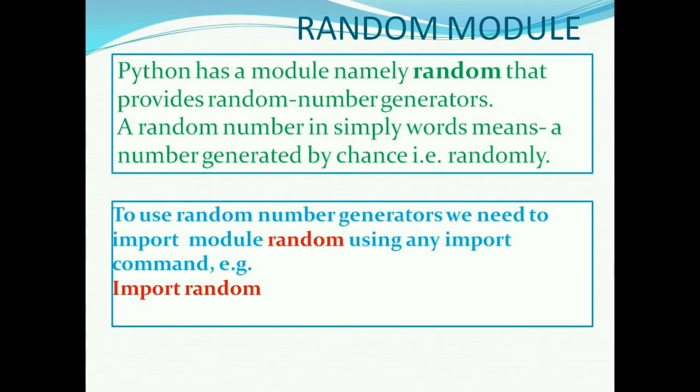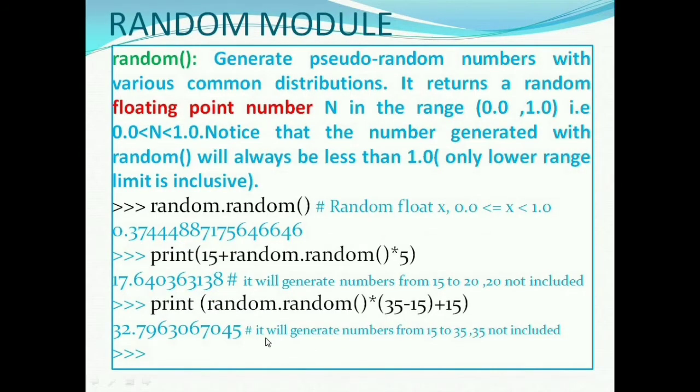Common random number generators used in Python are the random function. It returns a random floating point number in the range 0.0 to 1.0. Here, only the lower range, i.e., 0, is inclusive and it will generate numbers less than 1.0.